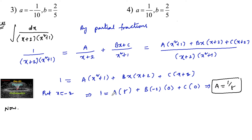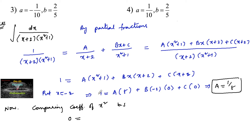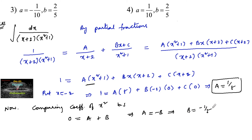Now comparing the coefficient of x² on both sides: the left side has no x² term, so 0 = A + B. Since A = 1/5, we get A + B = 0, which implies B = −A = −1/5.